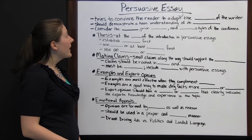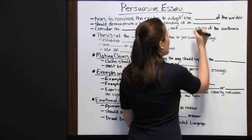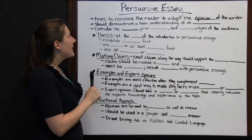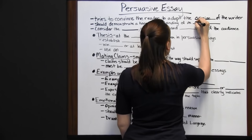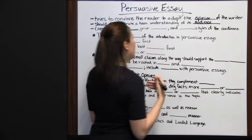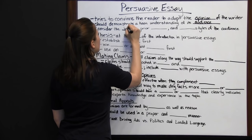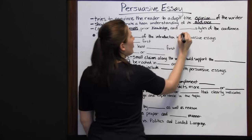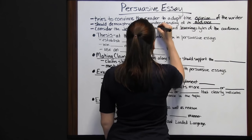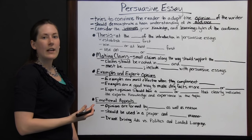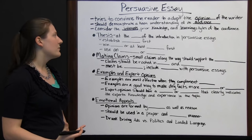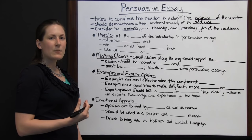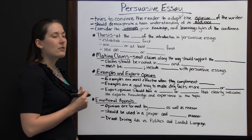When writing a persuasive essay, the writer will try to convince the reader to adopt their opinion on a particular issue. They do this in many ways, but they should demonstrate a keen understanding of their audience. You need to know who you're writing to and consider their interests, prior knowledge, and learning styles. Think about whether they'll already be interested in the topic, whether they have prior knowledge, and what's the best way to support your thesis so they'll eventually adopt your opinion.